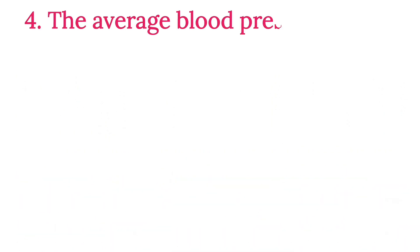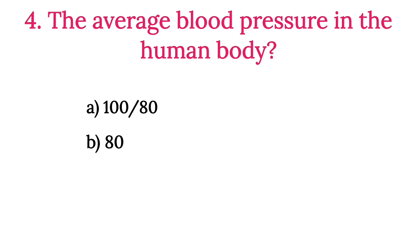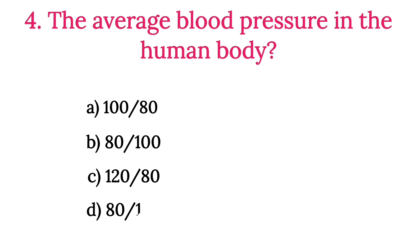MCQ Number 4: What is the average blood pressure in the human body? Option A: 100/80. Option B: 80/100. Option C: 120/80. Option D: 80/120. So the correct option is Option C, 120/80.